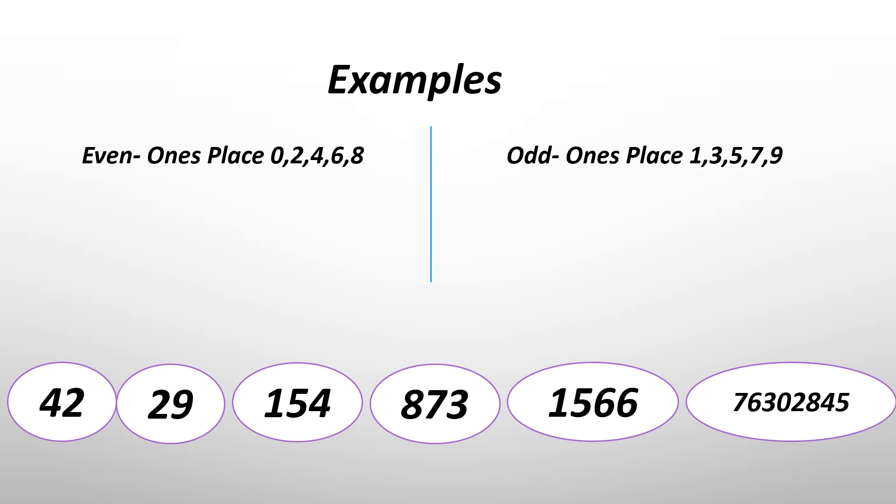So let's look at 42. Where does it go? Look at the last number. It's two. So it goes in the even section. Now let's look at 29. You might be confused because two is an even number and nine is not. But we're looking at the ones place. So nine is an odd number. So it goes in the odd section.